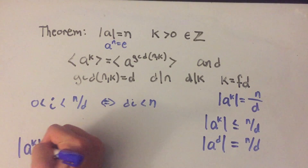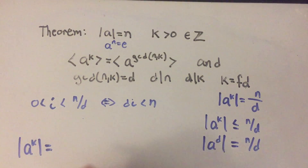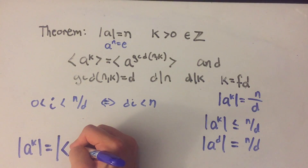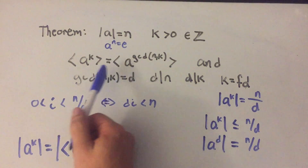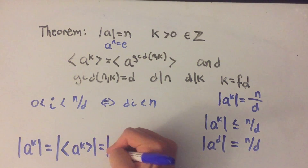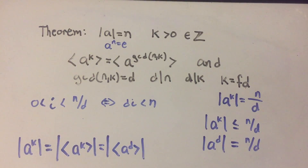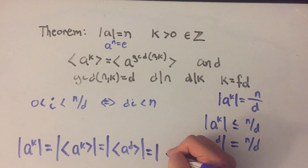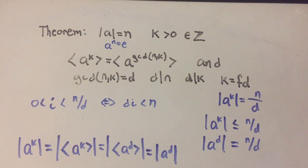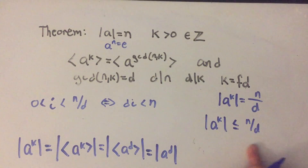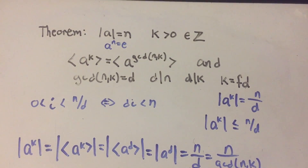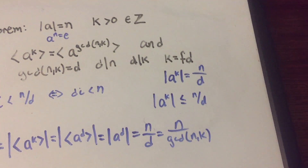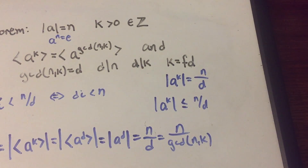Now let's consider the order of A to the k. By a previous theorem, the order of A to the k equals the order of the group generated by A to the k. By the first part of this theorem, the set generated by A to the k equals the set generated by A to the d, so this equals the order of the group generated by A to the d, which equals the order of A to the d. We just showed the order of A to the d is n over d. Therefore the order of A to the k equals n divided by the GCD of n and k, which is what we wanted to prove.